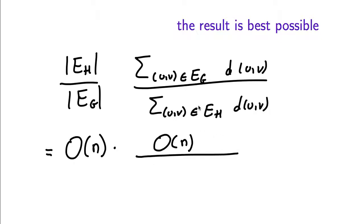Now what about the denominator? Here we are summing the shortest path distance from U to V for all pairs of vertices, for all the edges of H.